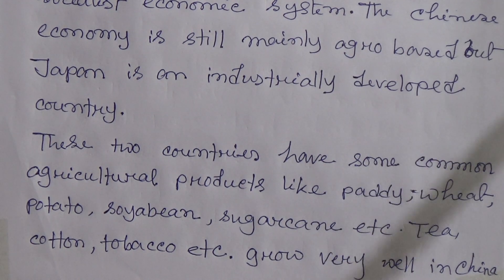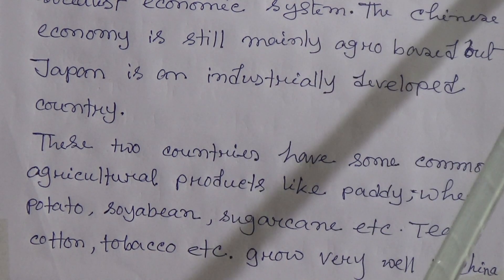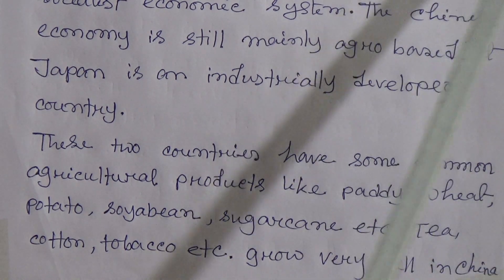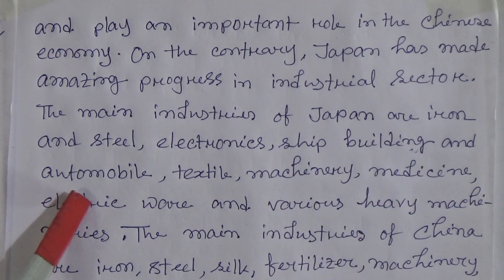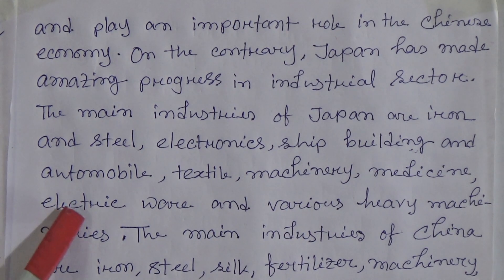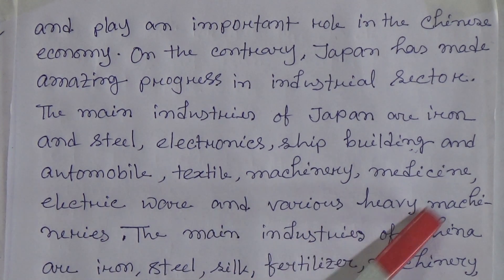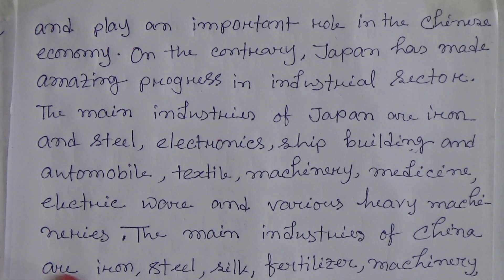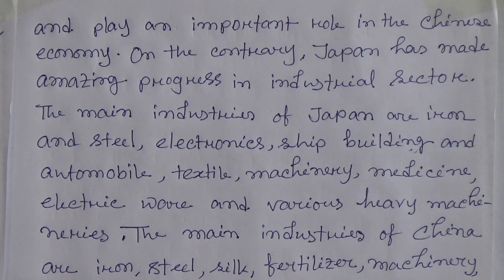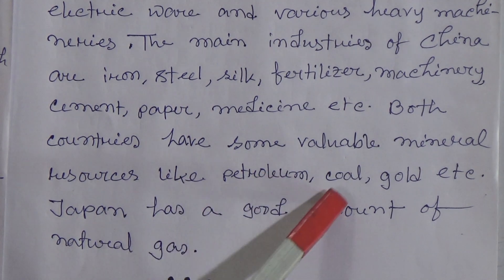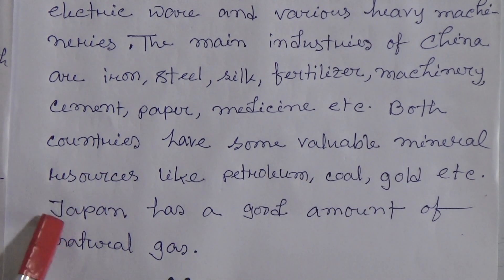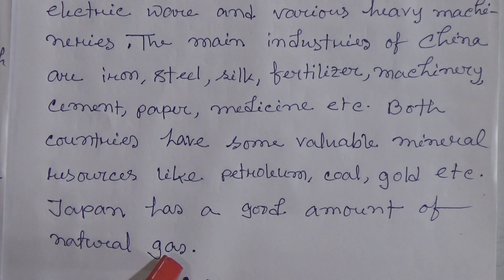Tea, cotton, and tobacco grow very well in China and play an important role in the Chinese economy. Japan has made amazing progress in the industrial sector. The main industries of Japan are iron and steel, electronics, shipbuilding, automobile, textile, machinery, medicine, and various heavy machineries. The main industries of China are iron and steel, silk, fertilizer, machinery, cement, paper, and medicine. Both countries have valuable mineral resources like petroleum, coal, and gold, and Japan also has a good amount of natural gas.